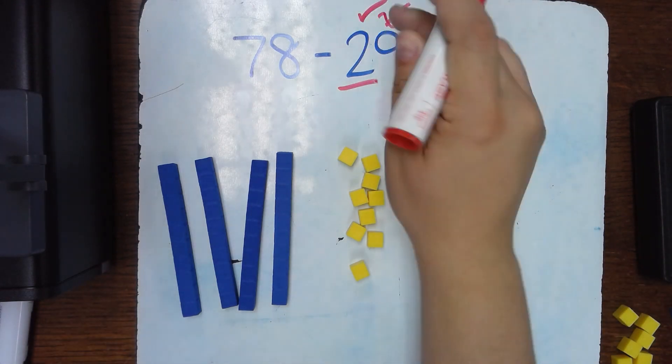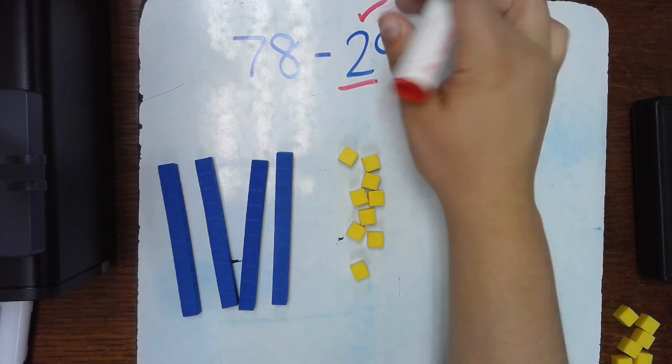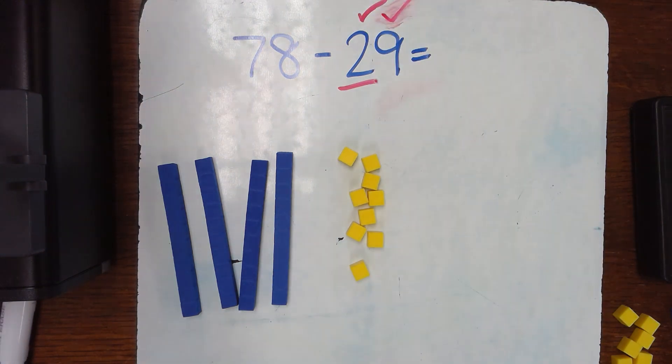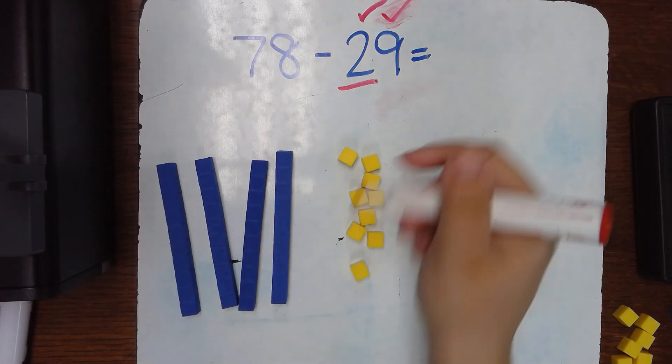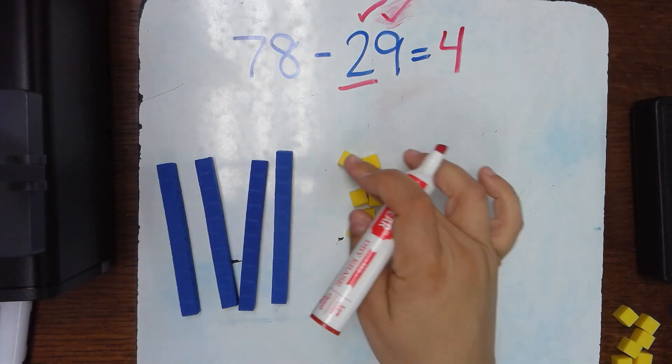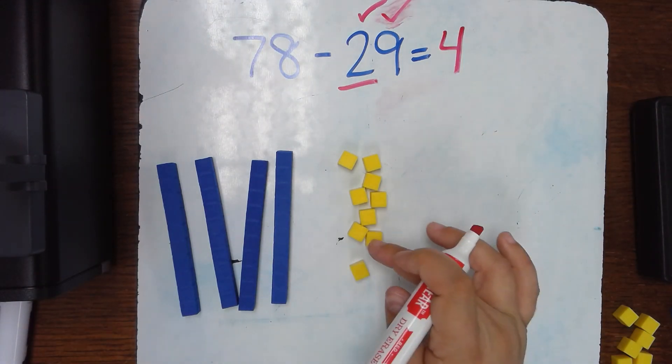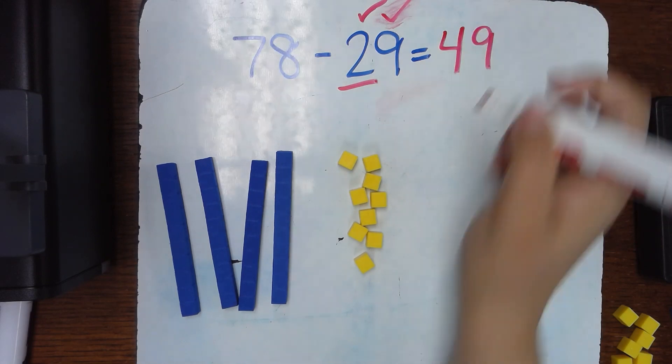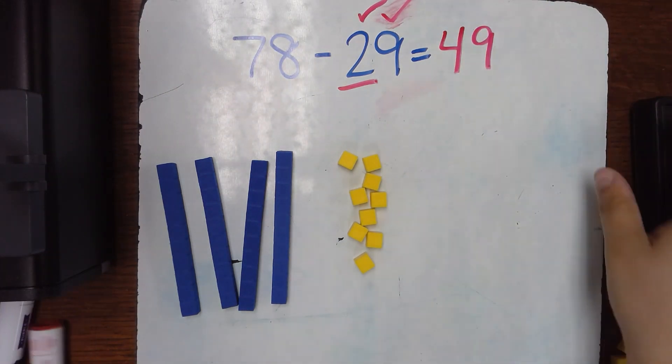So my answer, oopsie, my check mark of having 9 off. My answer is going to be 10, 20, 30, 40, 40, 1, 2, 3, 4, 5, 6, 7, 8, 9, 49. Okay, so that's the first strategy.